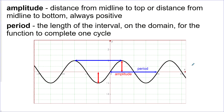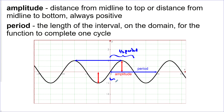The amplitude is the distance from the midline to the maximum, or from the midline to the minimum — it's always a positive measurement. The period is the length of the interval on the domain for the function to complete one full cycle: it could be measured from maximum to maximum, minimum to minimum, or from where it crosses the midline going up to the next time it crosses going up. Also note that going up and back to the midline takes the same time as going below and back, so that span is half a period.